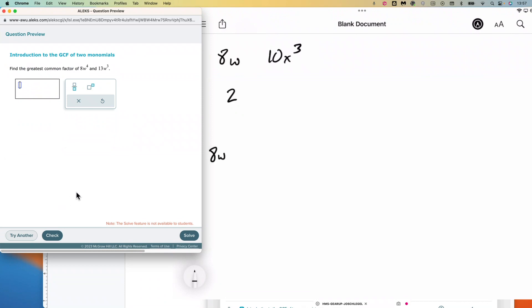So 8w to the 4th and 13w to the 3rd. Well, 8 and 13—13 is prime, so the only number that would go into both 13 and 8 would be 1. I'll go ahead and write the 1. And then w to the 4th and w to the 3rd—the lowest w there is w to the 3rd. Another way to write that is just simply w to the 3rd without the 1 in front of it.